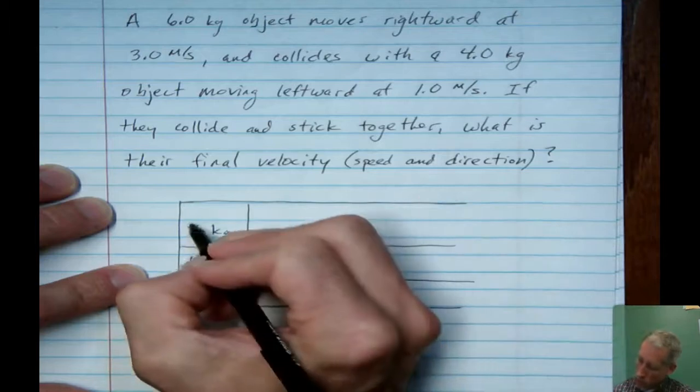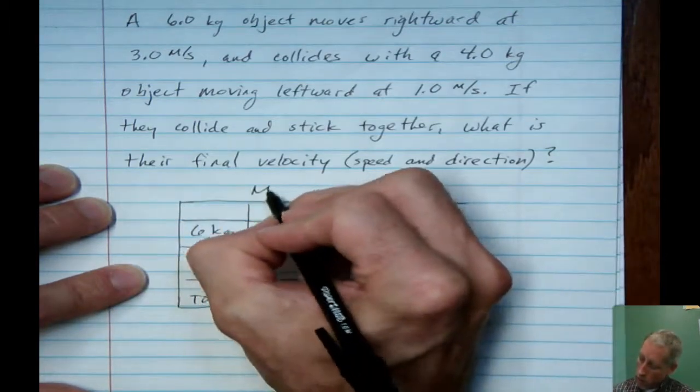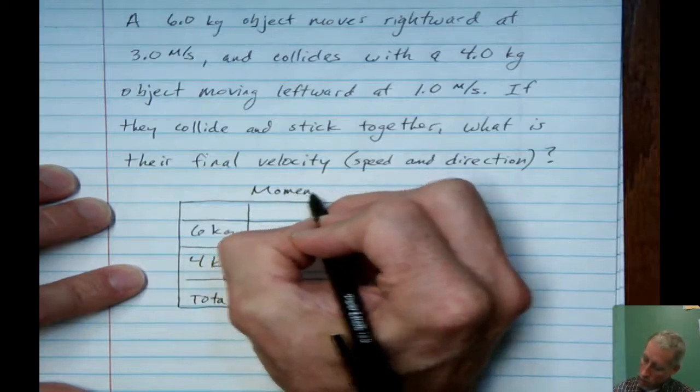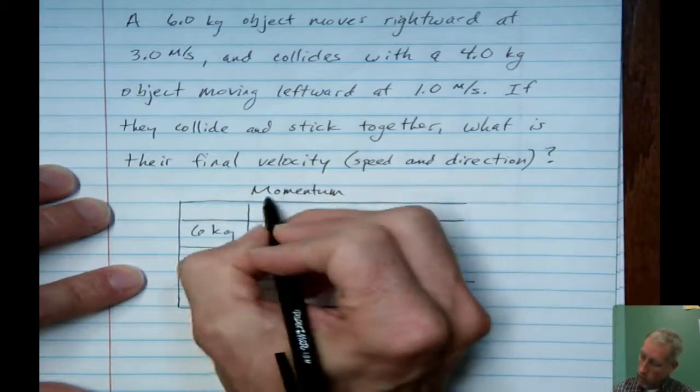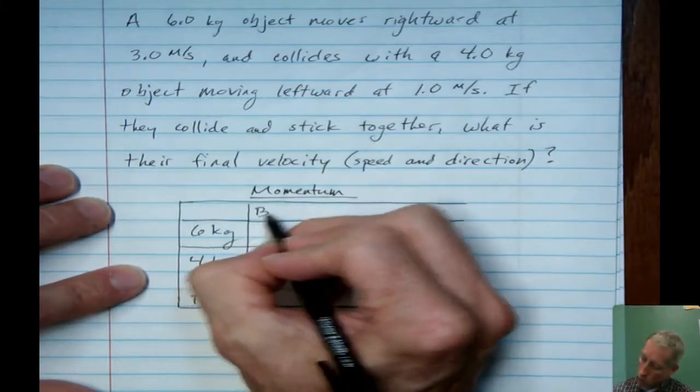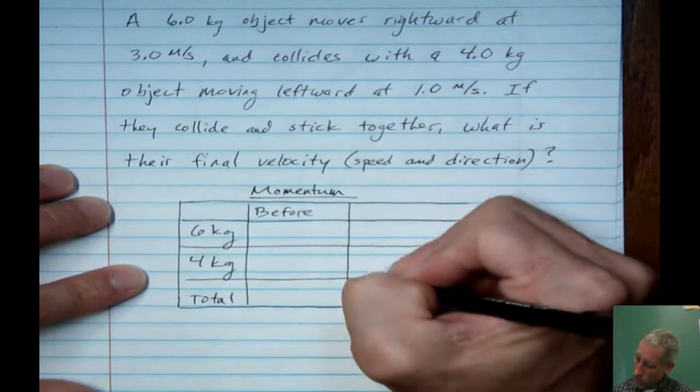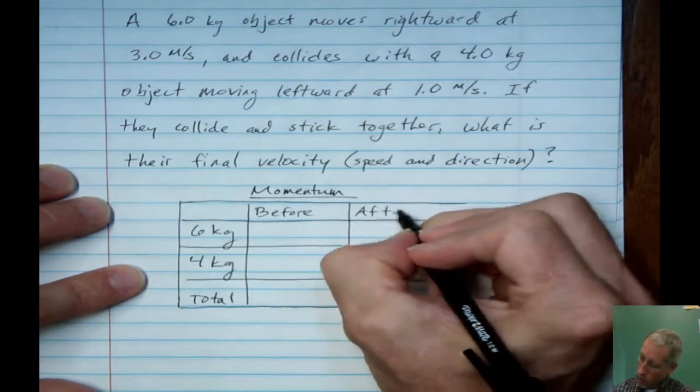And what you're going to be putting on your chart is momentum values. Be careful that you don't put velocity values in. That's an easy mistake to make. And we're going to look before the collision occurs, and after the collision occurs.